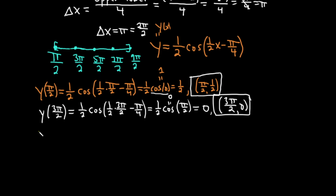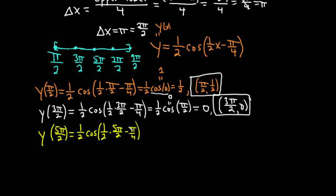For x = 5π/2: y = one-half · cos(one-half · 5π/2 − π/4) = one-half · cos(5π/4 − π/4) = one-half · cos(4π/4) = one-half · cos(π). Cosine of π is −1, so y = −1/2. Third ordered pair: (5π/2, −1/2).